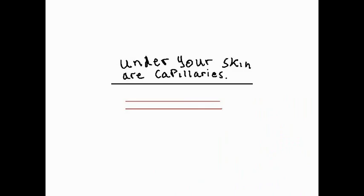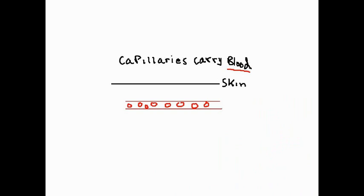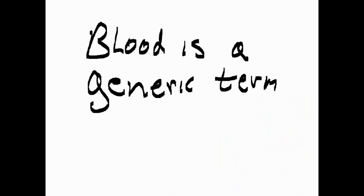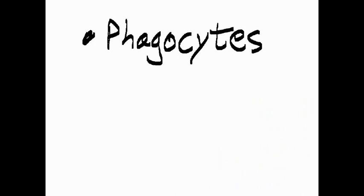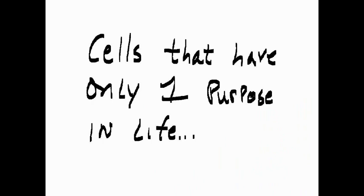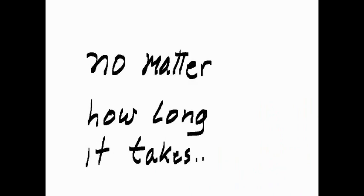Here is your skin. Under your skin are capillaries. Capillaries carry blood. Blood is a generic term — there are white blood cells, red blood cells, and phagocytes: cells that have only one purpose in life — to protect you. They will kill anything that threatens you and will hunt it down, relentlessly, no matter how long it takes. They will never stop until they kill whatever threatens you.